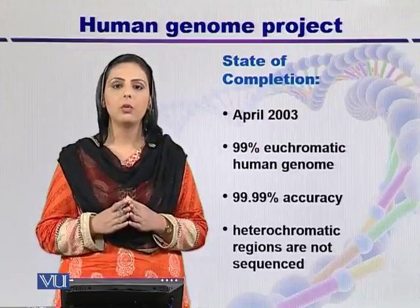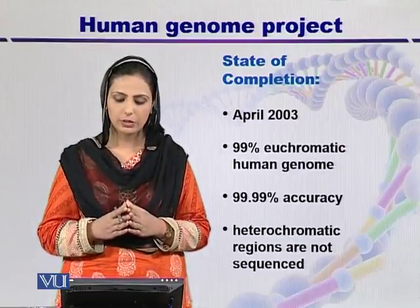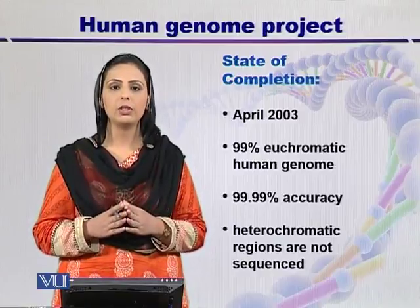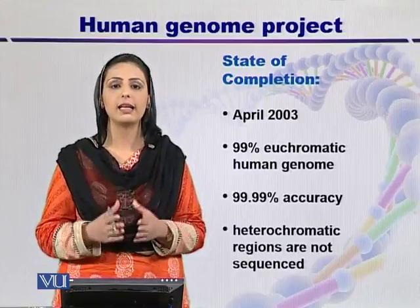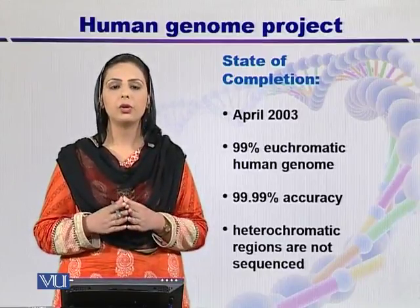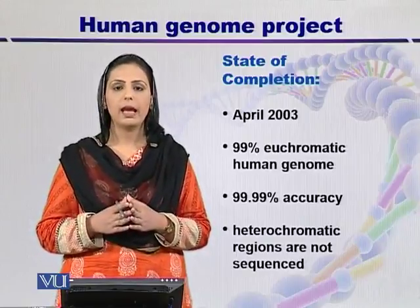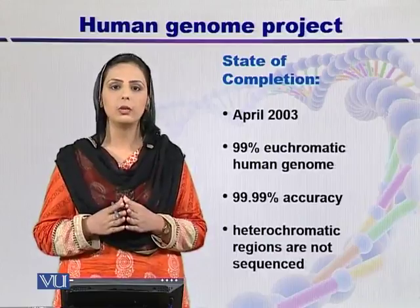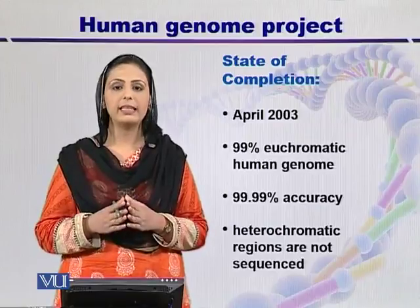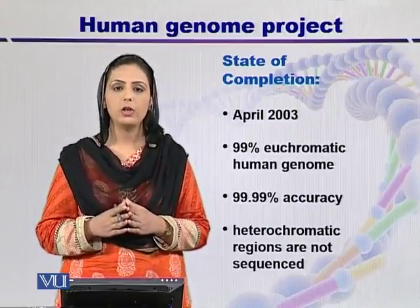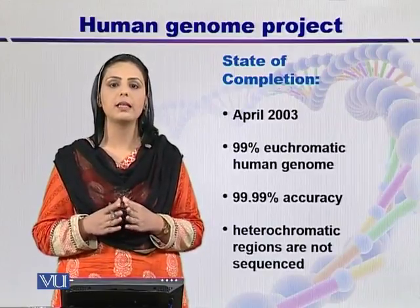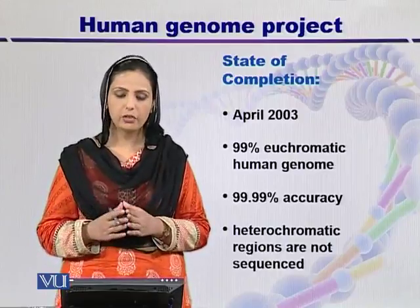The Human Genome Project was published in April 2003. It was successful in sequencing 99% of the eukaryotic genome with 99.99% accuracy. By the Human Genome Project, only the euchromatic segments were sequenced, but not the heterochromatic regions.